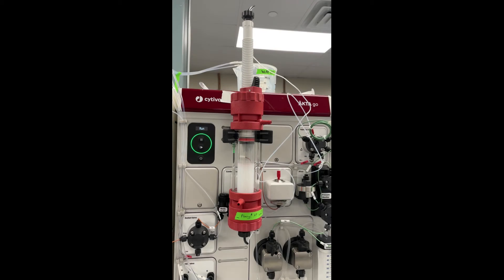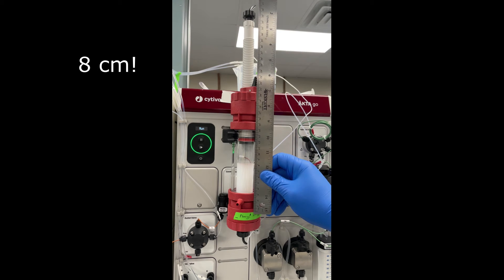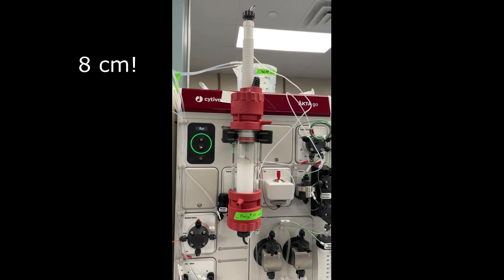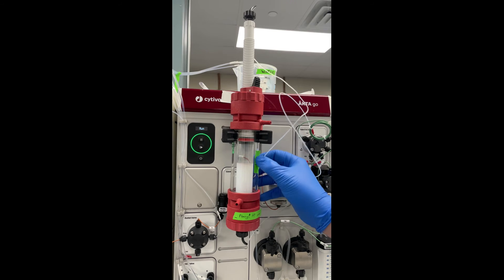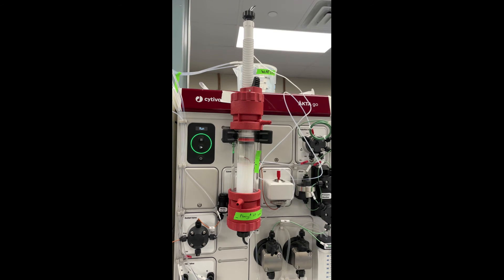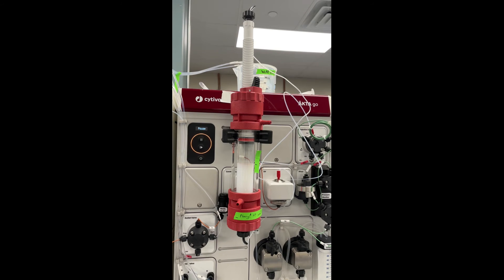Once the resin bed is settled, it's time to lower the adapter. The first thing we're going to do is measure the settle bed height, and we'll find that I actually got it right the first time, so that's awesome. Then we'll mark where the resin bed settled to. This way we'll know where to lower the adapter to after we hit the pause button on the chromatography system.